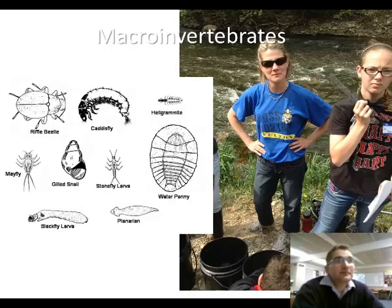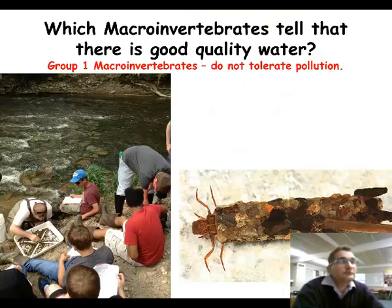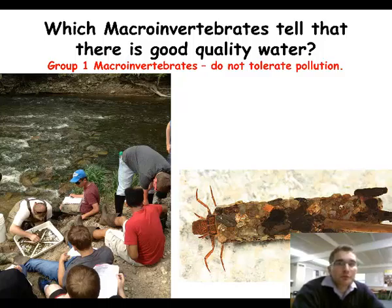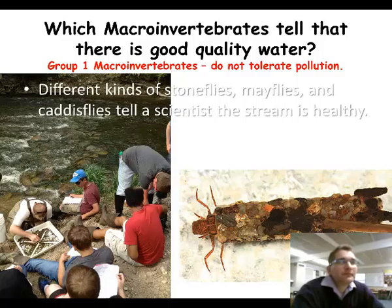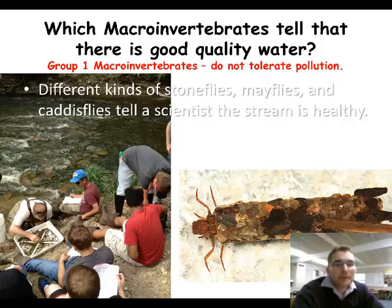Here's a picture of some different types of macroinvertebrates we may find. Group 1 macroinvertebrates are those that do not tolerate pollution. They include different types of stoneflies, mayflies, and caddisflies, and they will help us know that the stream is healthy.